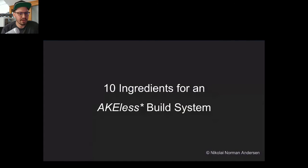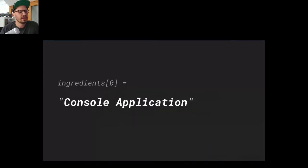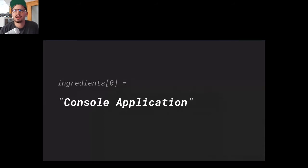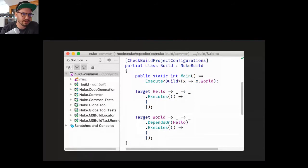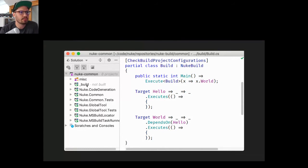The first ingredient is that NUKE is a console application. If you've dealt with MSBuild, Fake, or Cake, those use very special approaches — MSBuild uses XML, for instance. But NUKE is different because it uses a simple console application. Here's a screenshot from the NUKE project itself — you can see a solution with a build project marked as not being built.